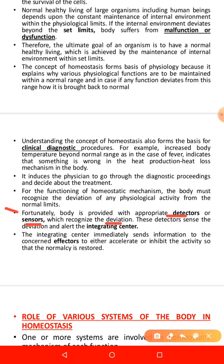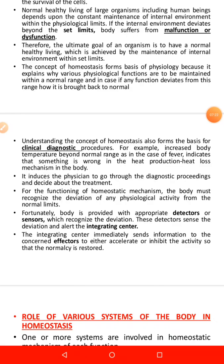These detectors sense the deviation and alert the integrating center. The integrating center is a complex system — mainly the brain. The brain has various components: emotional centers like the limbic system and amygdala, as well as the cerebellum, cerebrum, cerebral cortex, and hypothalamus. All of these are integrating centers that process information and make decisions so that the body can adjust to changes in the environment.